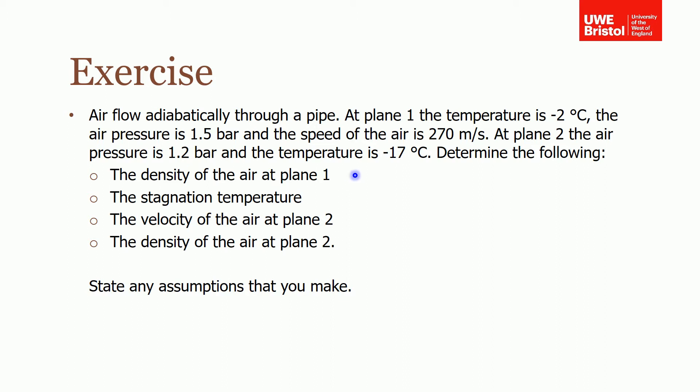There are four parts to this question. You had to find the density of the air at plane 1, the stagnation temperature, the velocity of the air at plane 2, and the density of the air at plane 2. State any assumptions that you make.